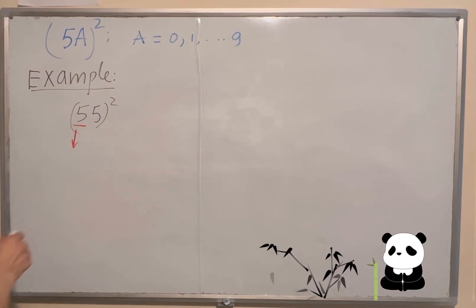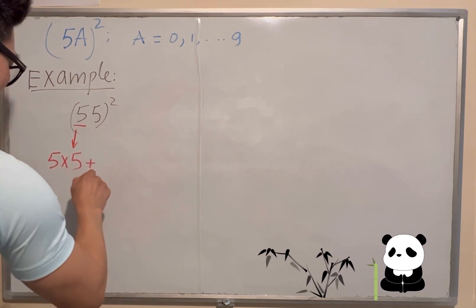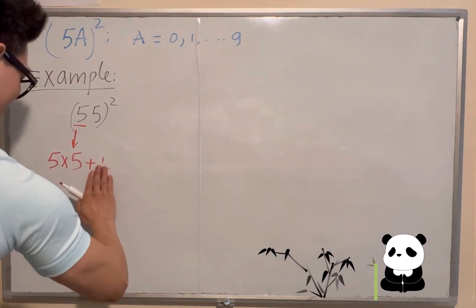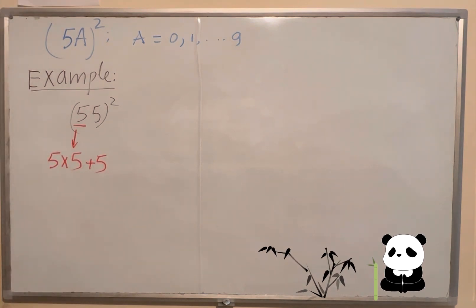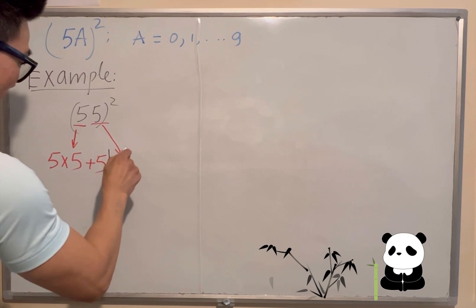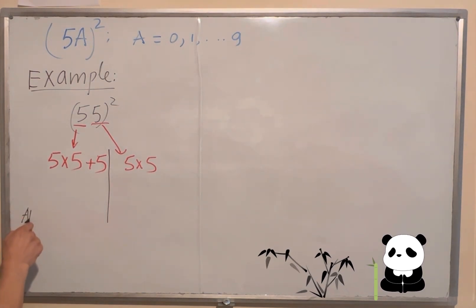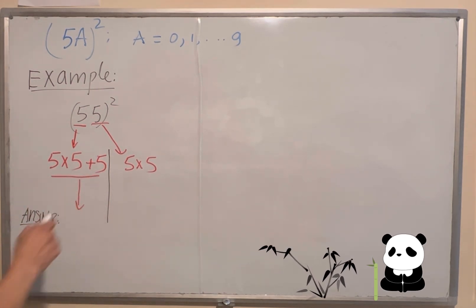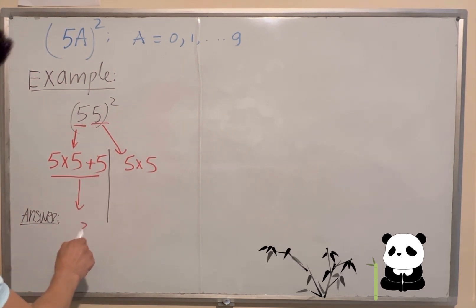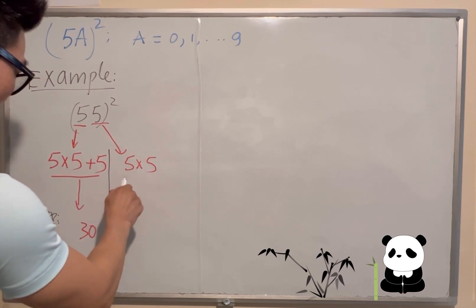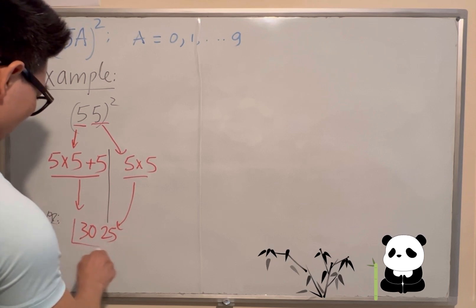First, I will do 5 times 5, and then I add 5. So 5 times 5 is 25, plus 5 equals 30. Then the last two digits will be 5 times 5, which is 25. So you write down 25. That gives us the answer: 3025.